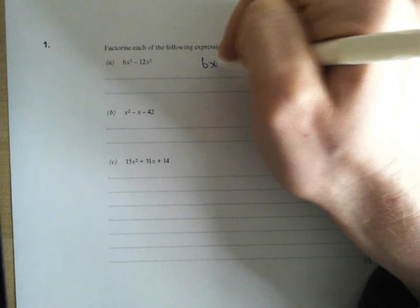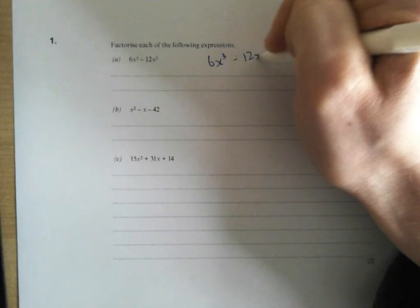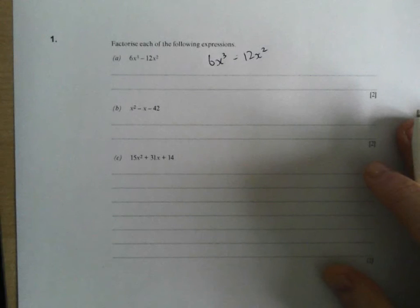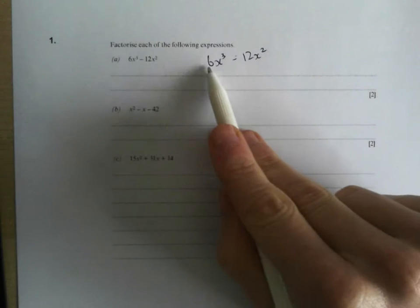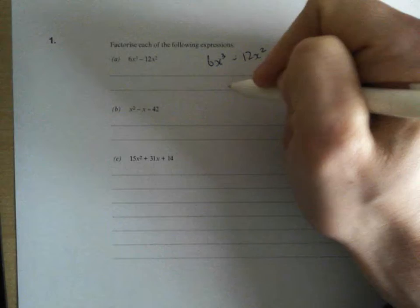So let's look at this. I'll just write it a bit clearer, that's 6x cubed minus 12x squared. Can I take a common factor out of that? Well, yeah, I can because I've got a 6 and I've got a 12, so I can take a factor of 6 outside.